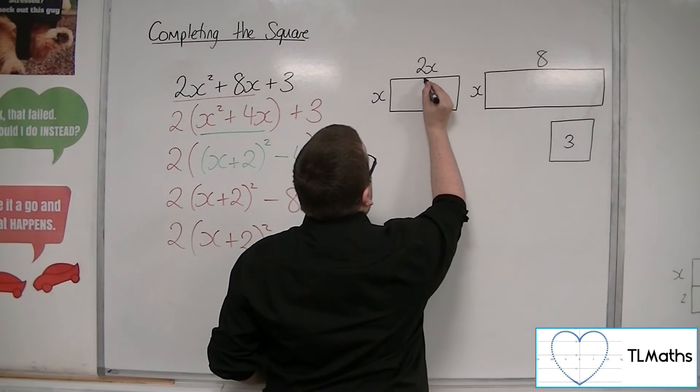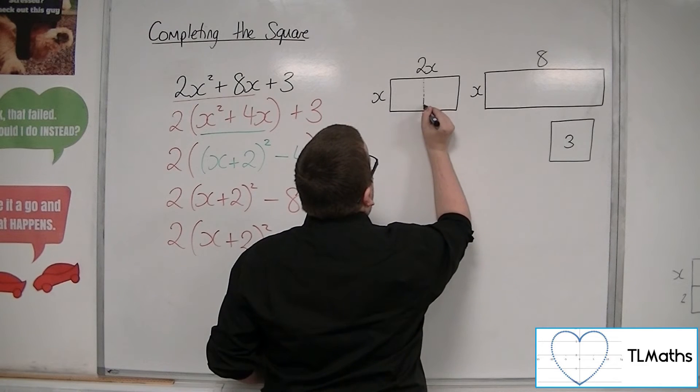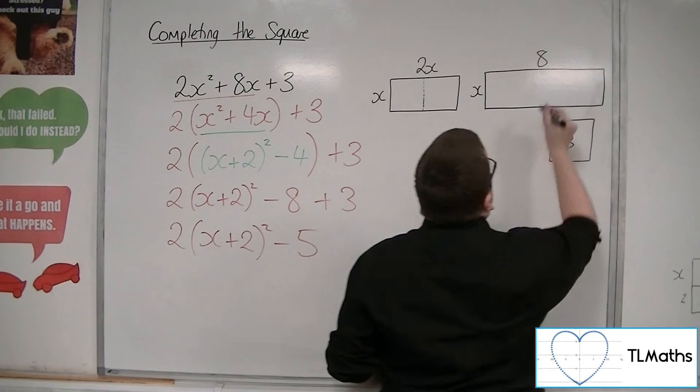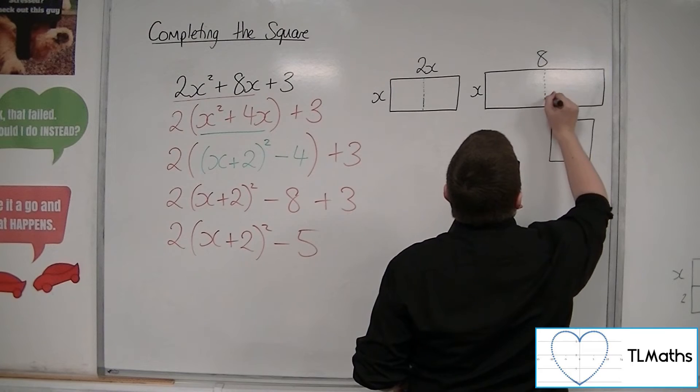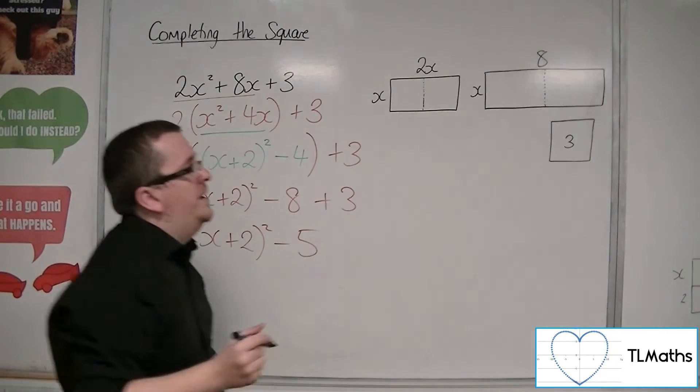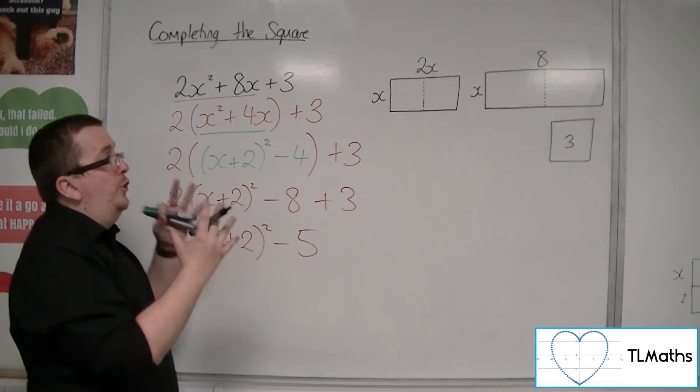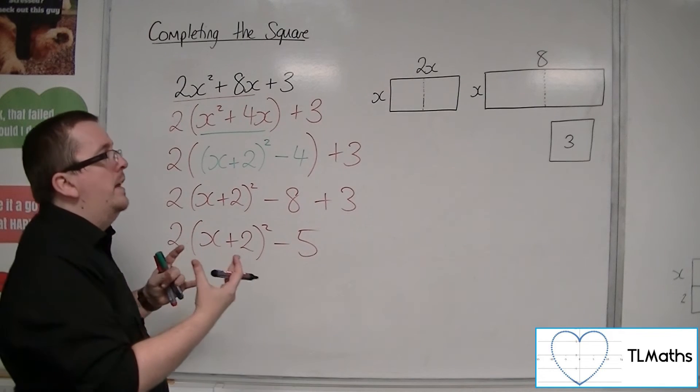So the idea would be that I would halve that and halve that. So it would be like factoring 2 out of the bracket like I'm doing there.